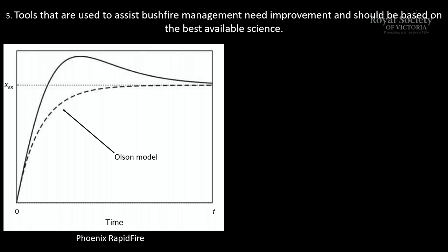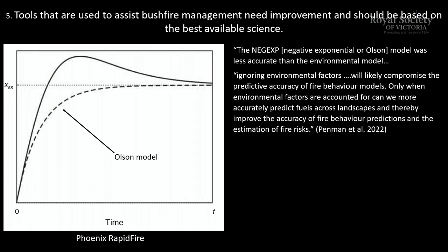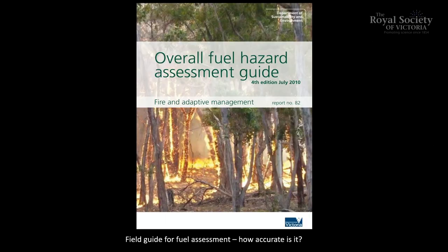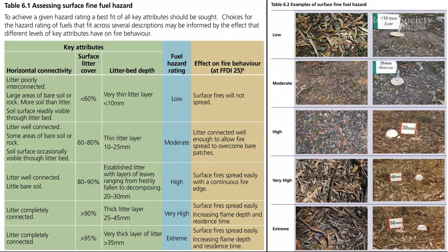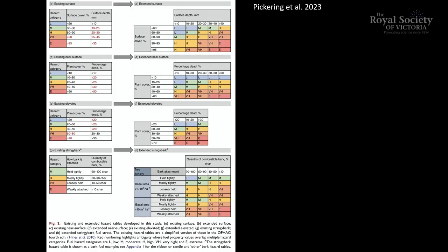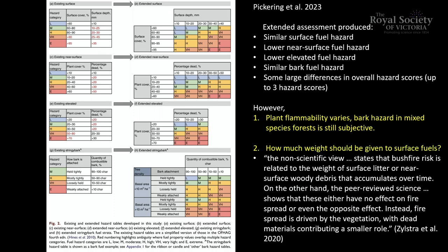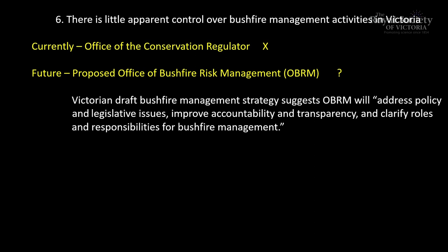We need to use best available science. The Olsen model, used to forecast or predict fuel, is incorrect. Not a single study has found the Olsen model to be accurate — every study that's been done has found the opposite. Phoenix Rapid Fire also uses a fire hazard guide to indicate what the fuel hazard is, but it's very subjective. There has been a very recent attempt to try and improve the model, but there are still problems. One of the key problems is how much weight you should give to dead fuel anyway, when it has little impact on fuel hazard.